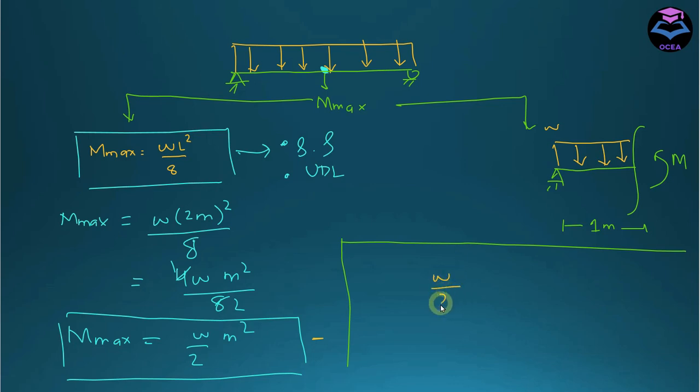w/2 meter squared equals 240 Newton-meters, therefore w equals 480 Newtons per meter.